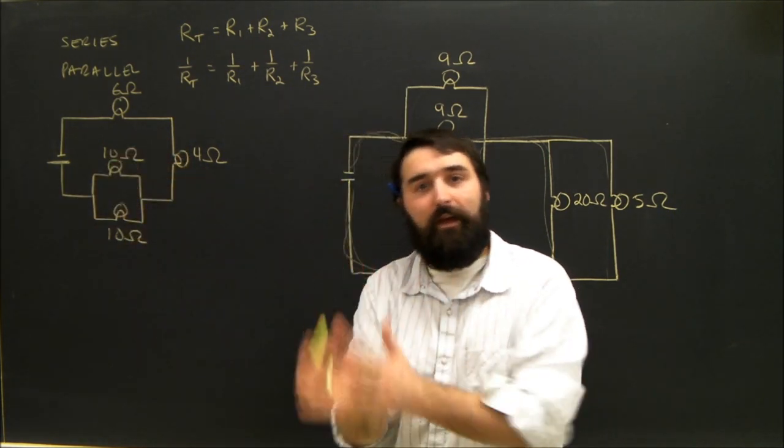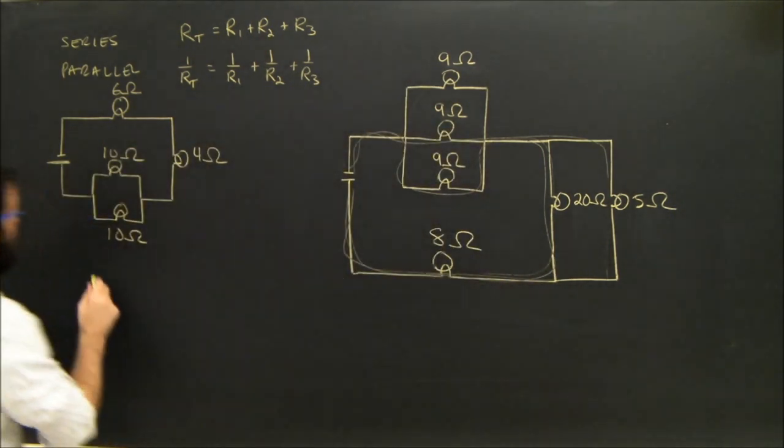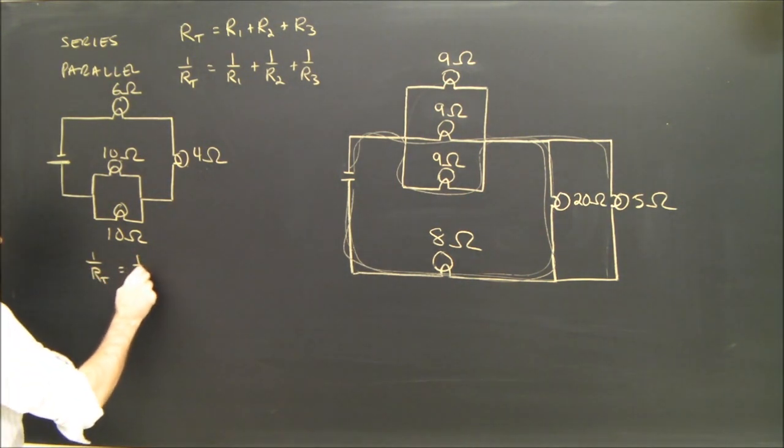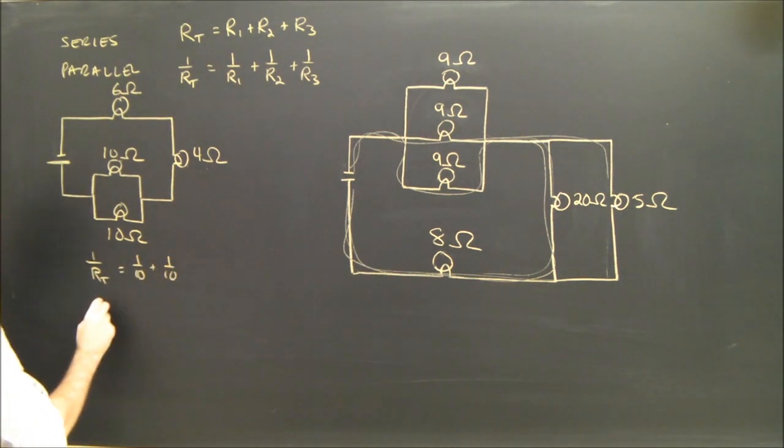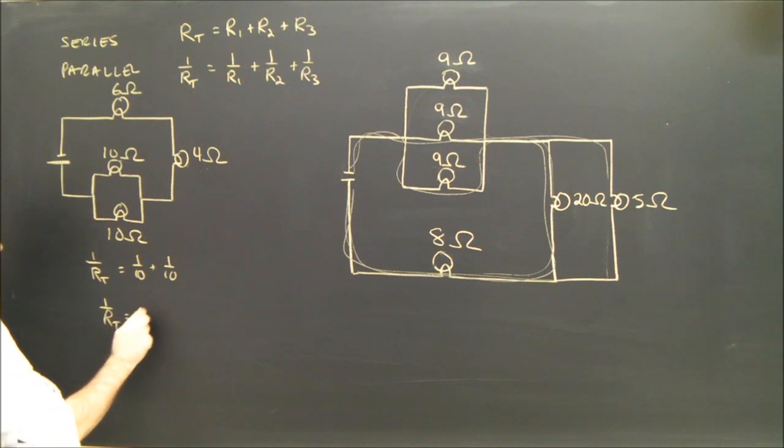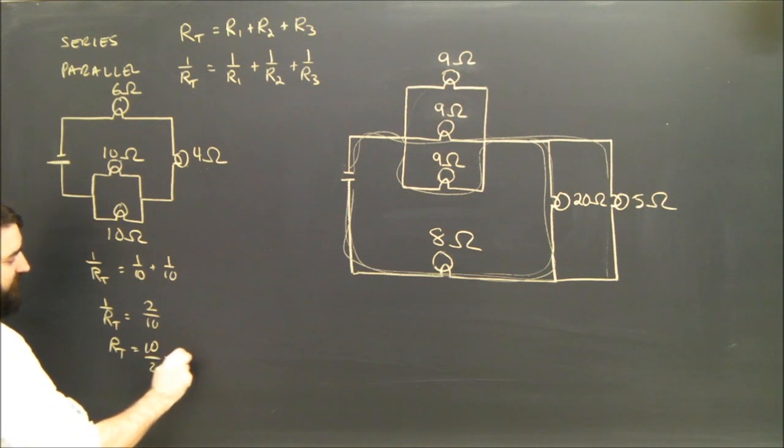The two 10 ohms, they are in parallel, so that's really easy. 1 over the total equals 1 over 10 plus 1 over 10. So that means 1 over the total equals 2 over 10, which means if we've got to flip that guy over, the answer is 10 over 2, which is of course 5.